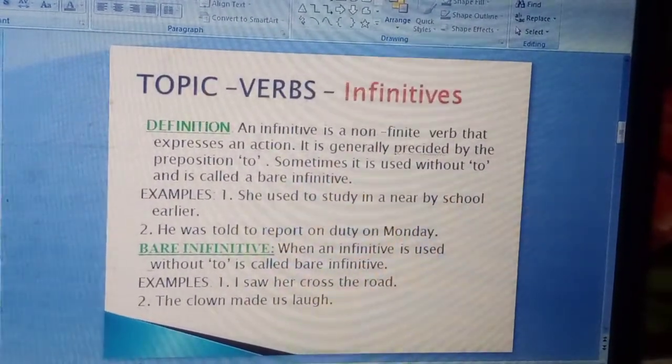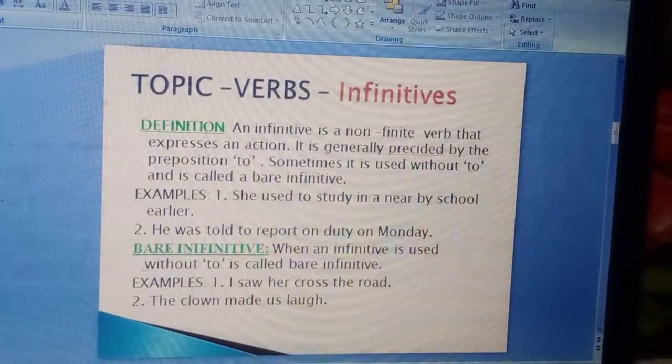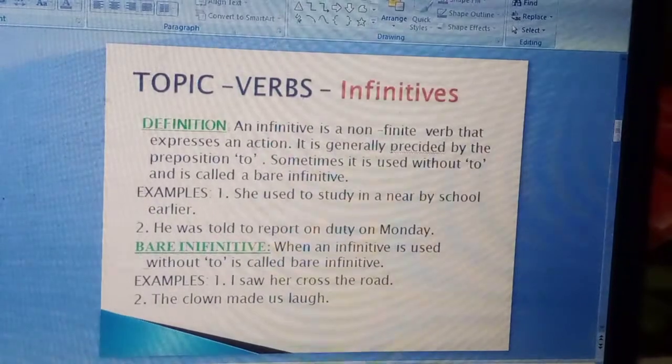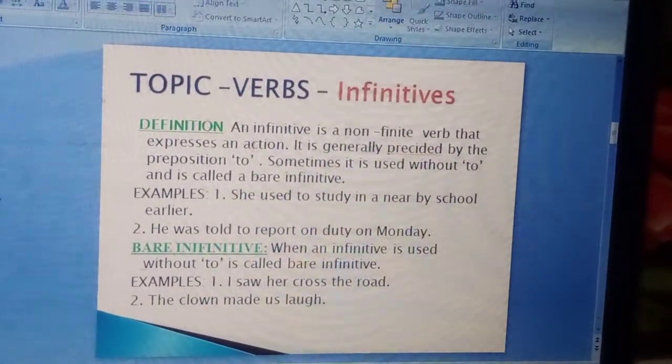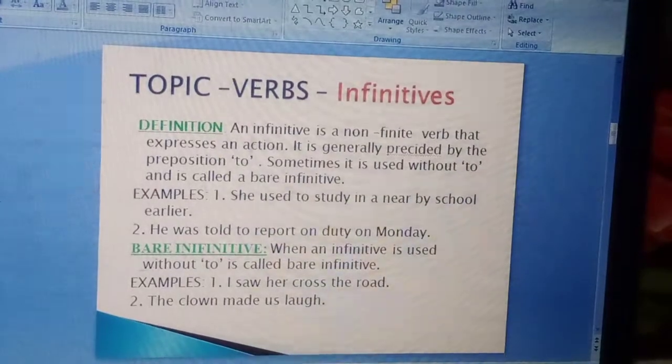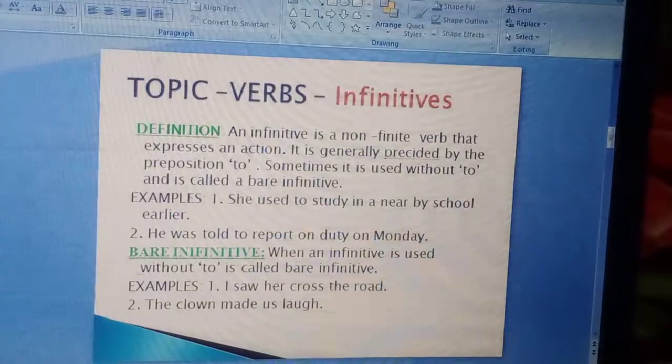Then another concept here, bare infinitive. When an infinitive is used without to, this is called bare infinitive. For example, I saw her cross the road. The clone made us love. Here the words like cross and love, they are the examples of bare infinitives.